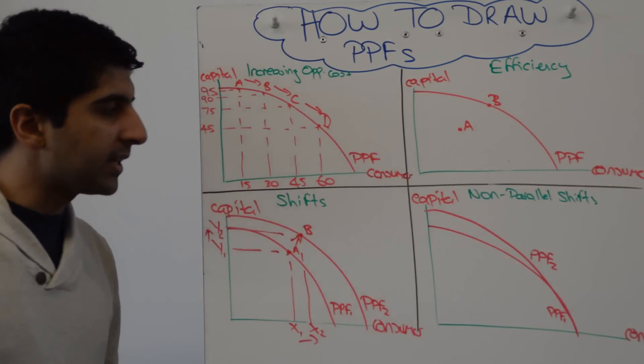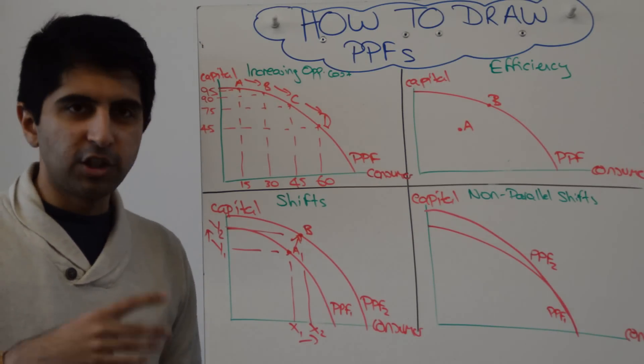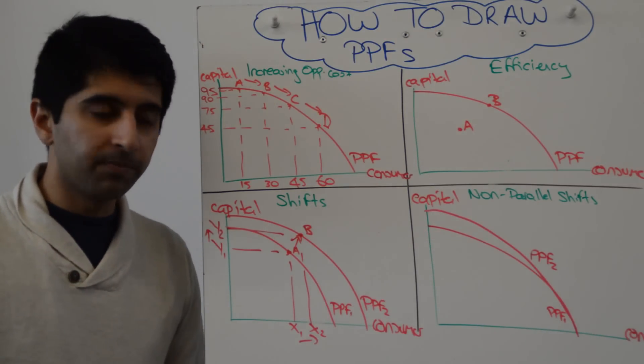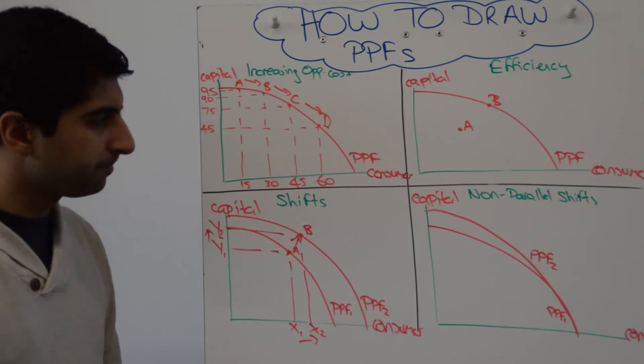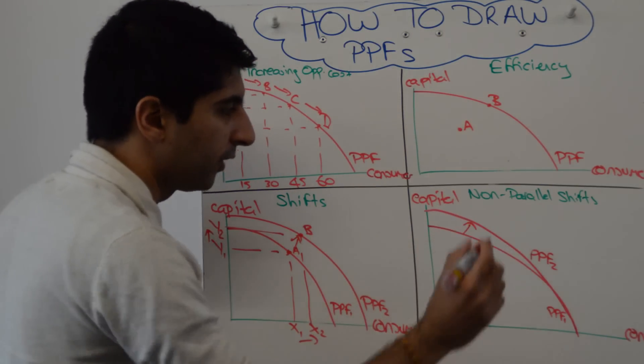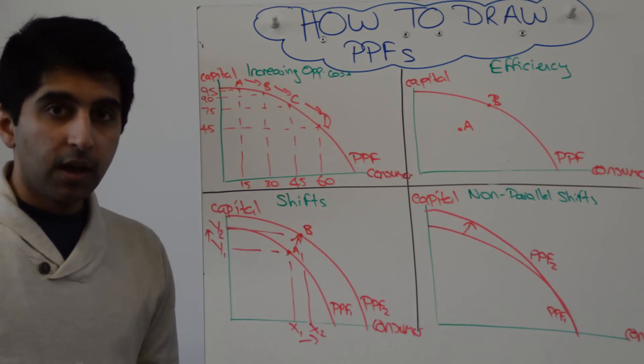If ever you get a situation where you need to show how a shift is favouring one or the other, then this is how you do it. If you want to draw the arrow, you can draw the arrow like such.